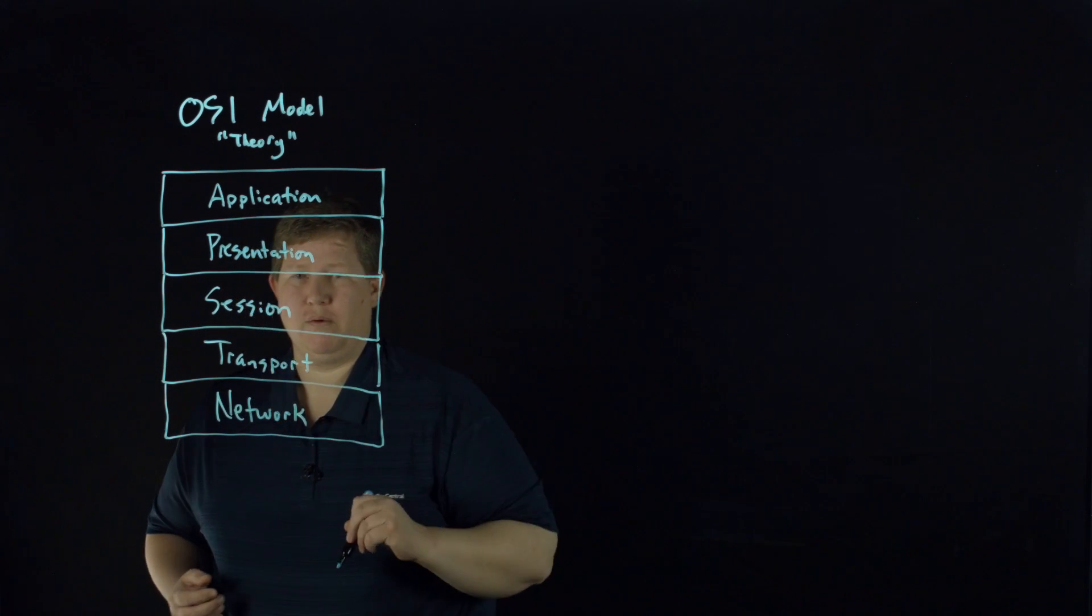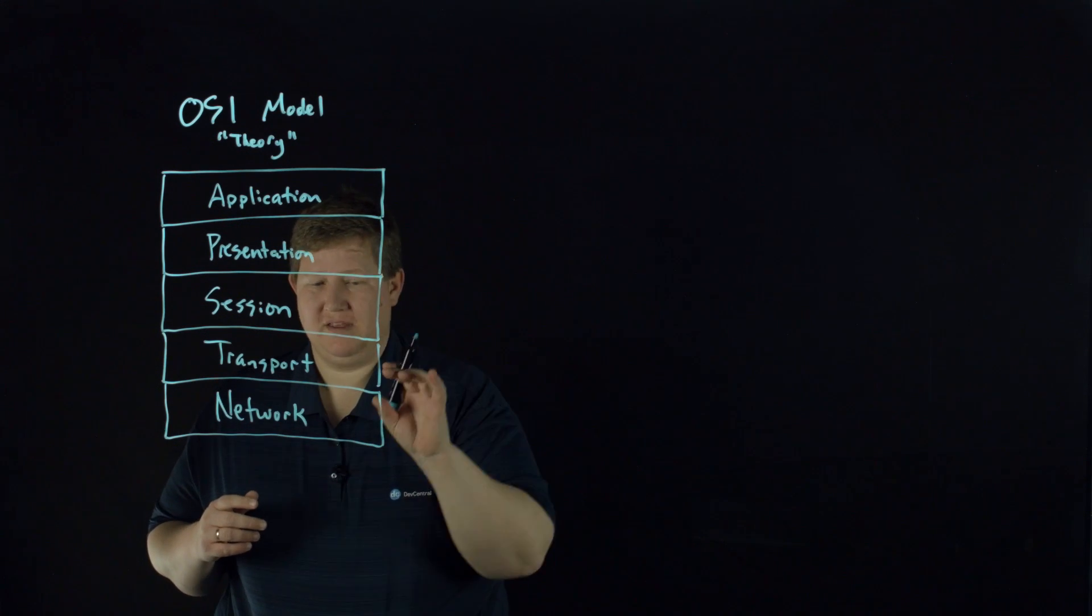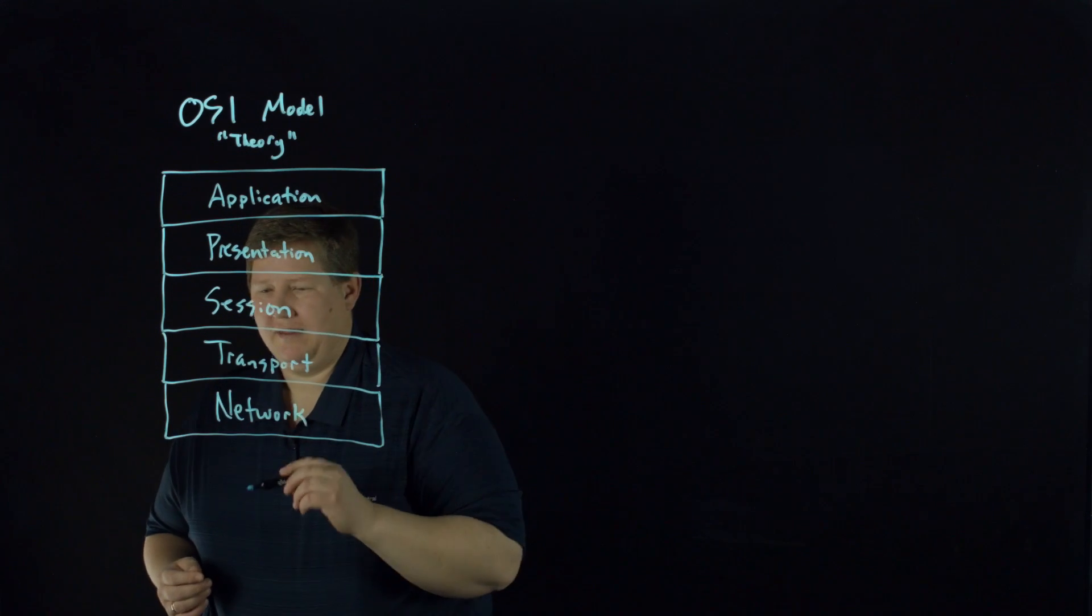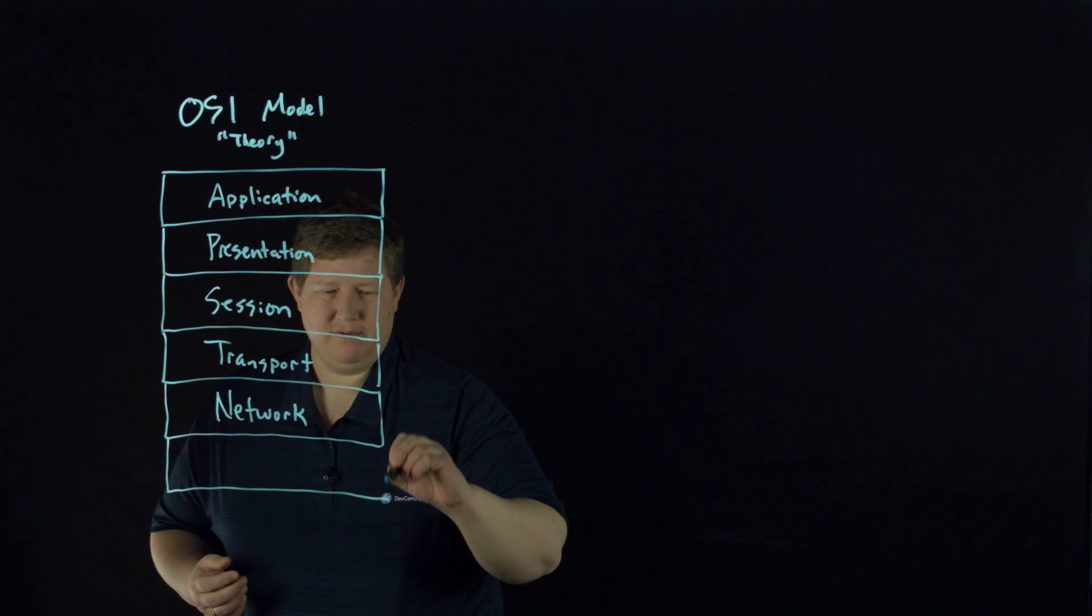Then you have your network layer. This is your – on the TCP/IP model, that's the IP layer. And that's where your IP address is, IPv4 and IPv6.